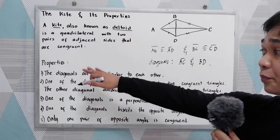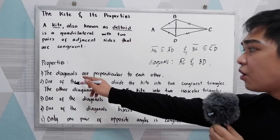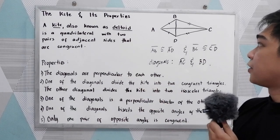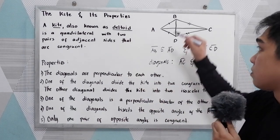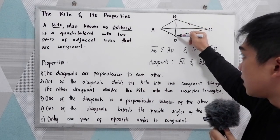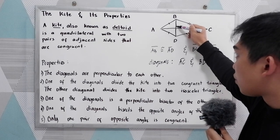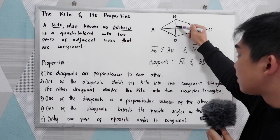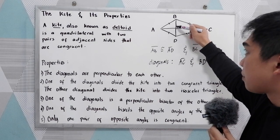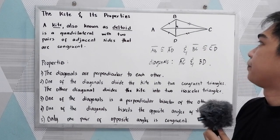Now we have the properties. First, the diagonals are perpendicular to each other. So diagonal BD and diagonal AC will form a 90-degree angle because they are perpendicular to each other.